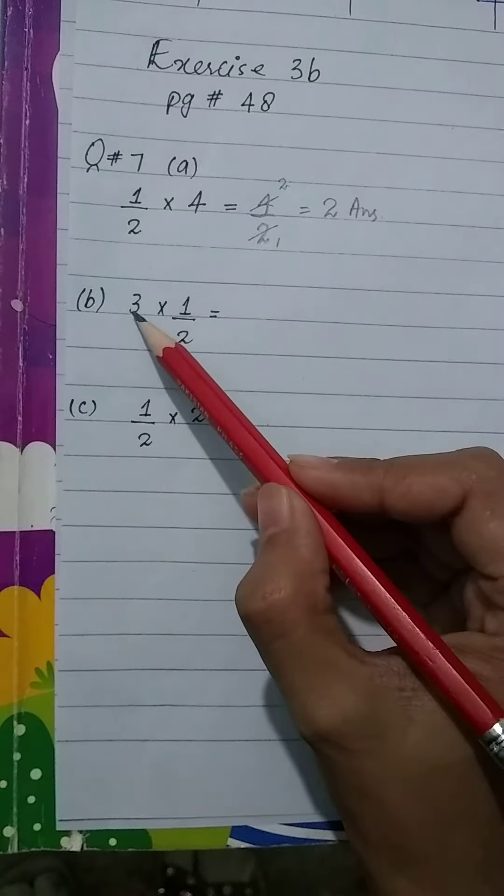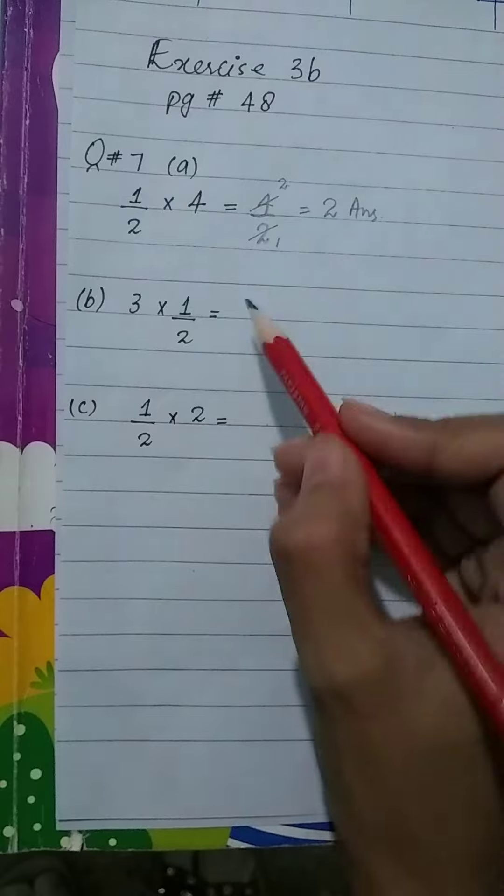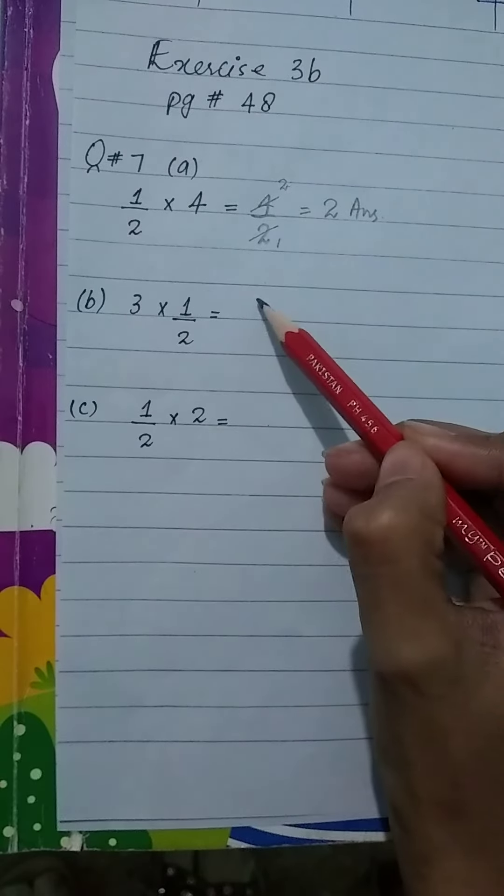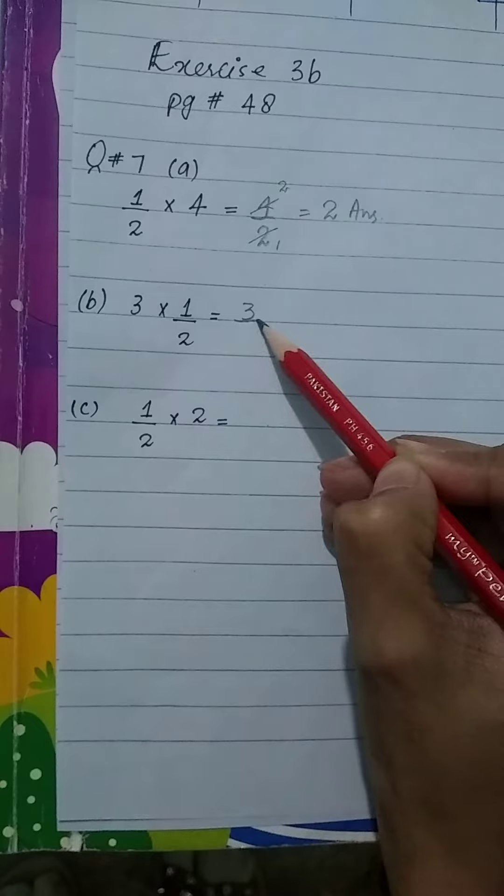Now look at the second part. 3 multiply by 1 over 2. So 3 ones are 3 over 2.